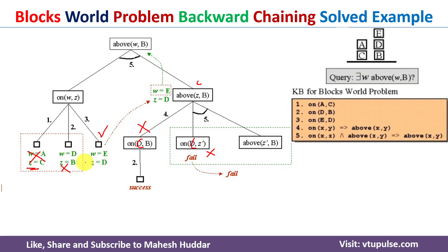The only satisfiable result is z=d and w=e. Replacing z with d gives d is present above b, and replacing w with e gives e is present above b. This is how we use the backward chaining technique to solve the blocks world problem and answer the given query. I hope the concept is clear — if you liked the video, please like, share, subscribe, and press the bell icon for regular updates.